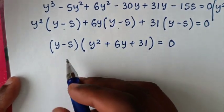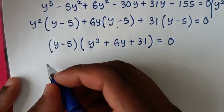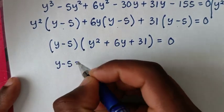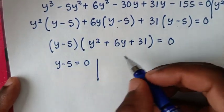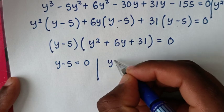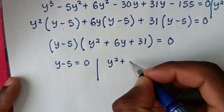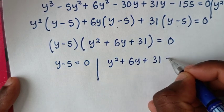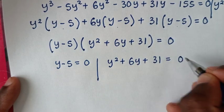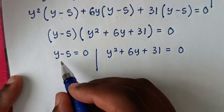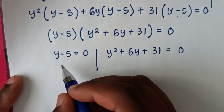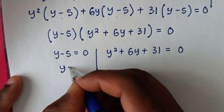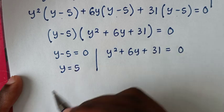Now, (y minus 5) is common throughout, so we factor it out, giving (y minus 5)(y squared plus 6y plus 31) equals 0. This gives two solutions: y minus 5 equals 0, which means y equals 5; and y squared plus 6y plus 31 equals 0.